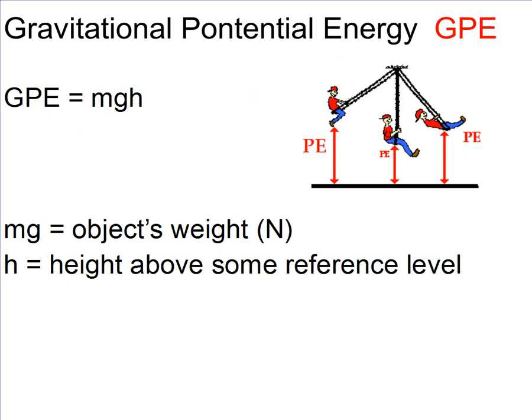Gravitational potential energy is defined to be MGH. Sometimes we're going to use GPE, but I'm really too lazy to keep that up. So I'm just going to do PE is MGH.